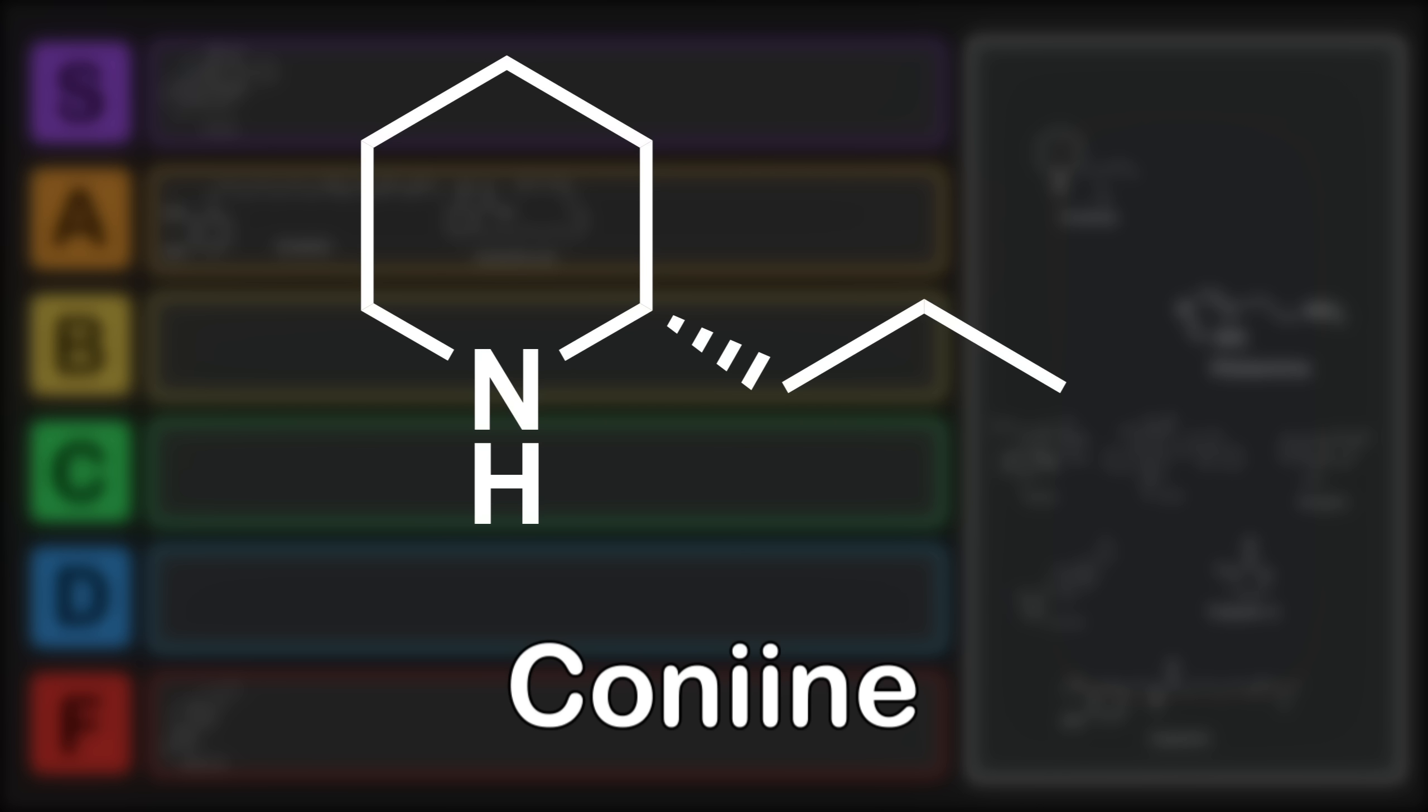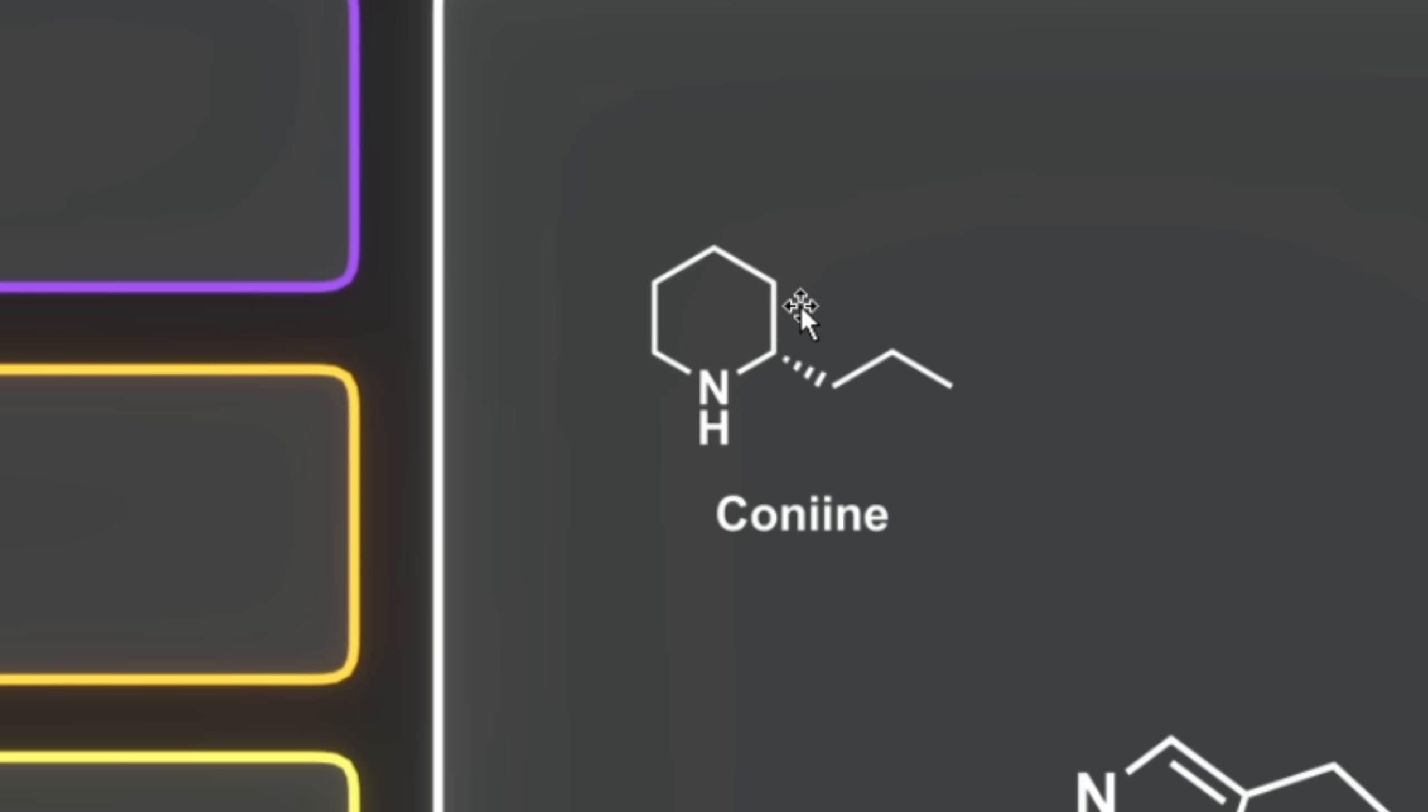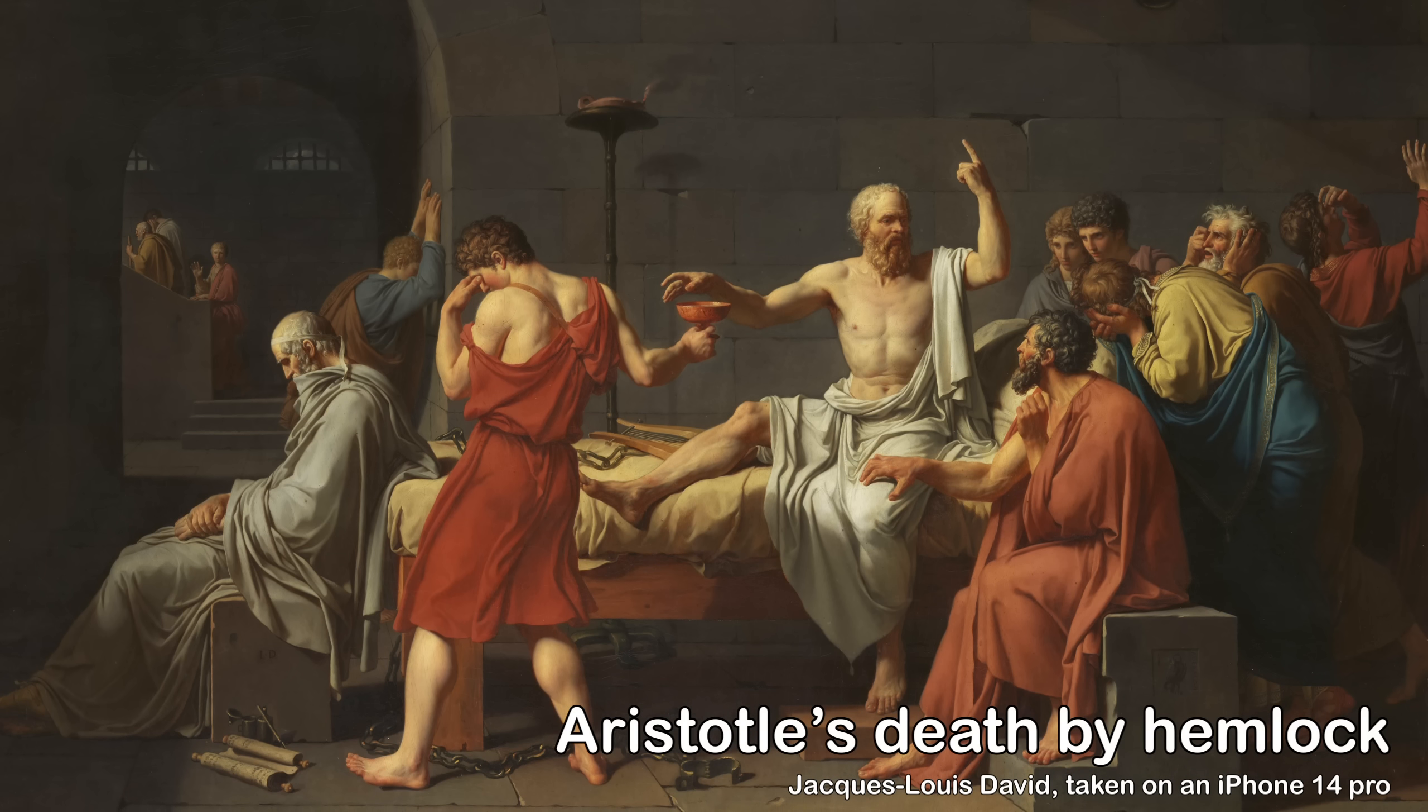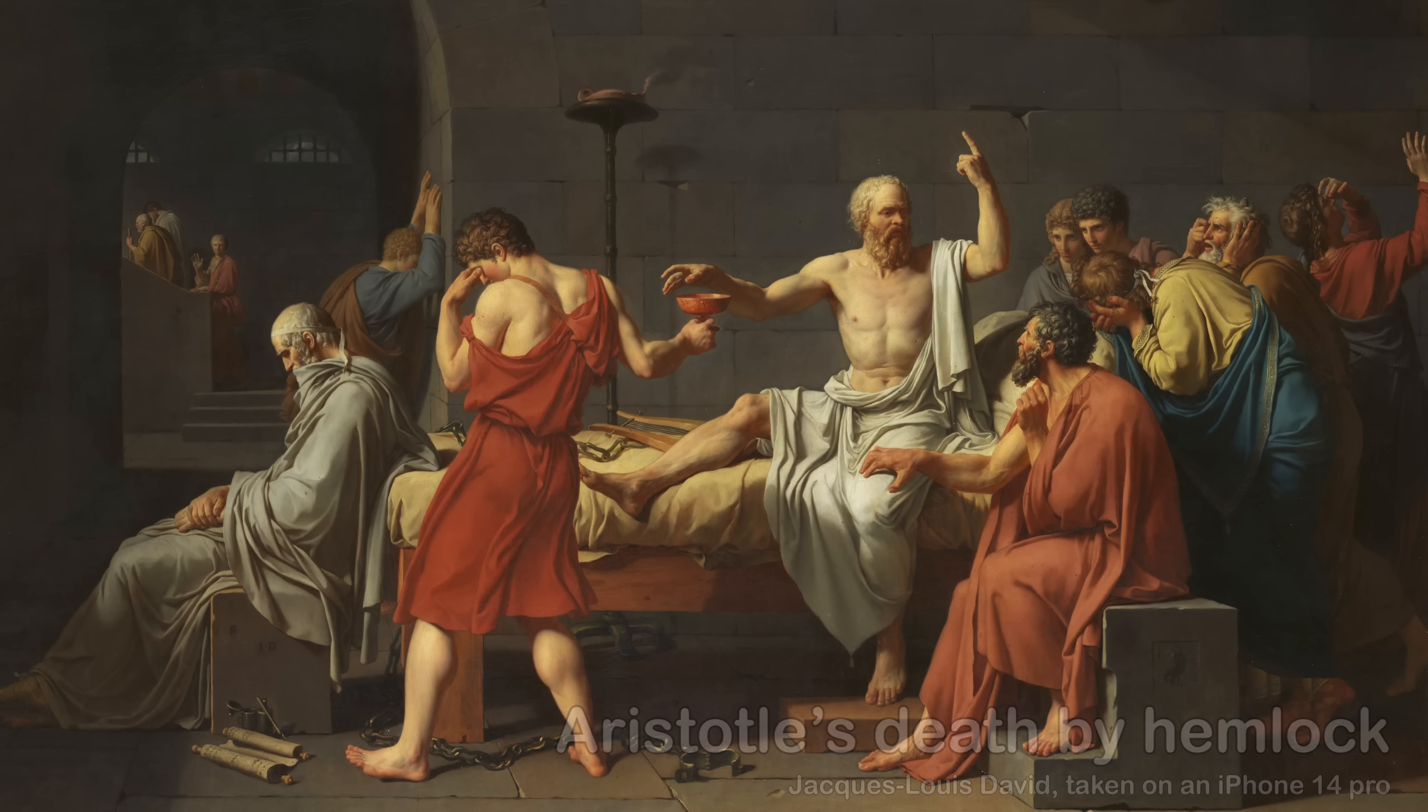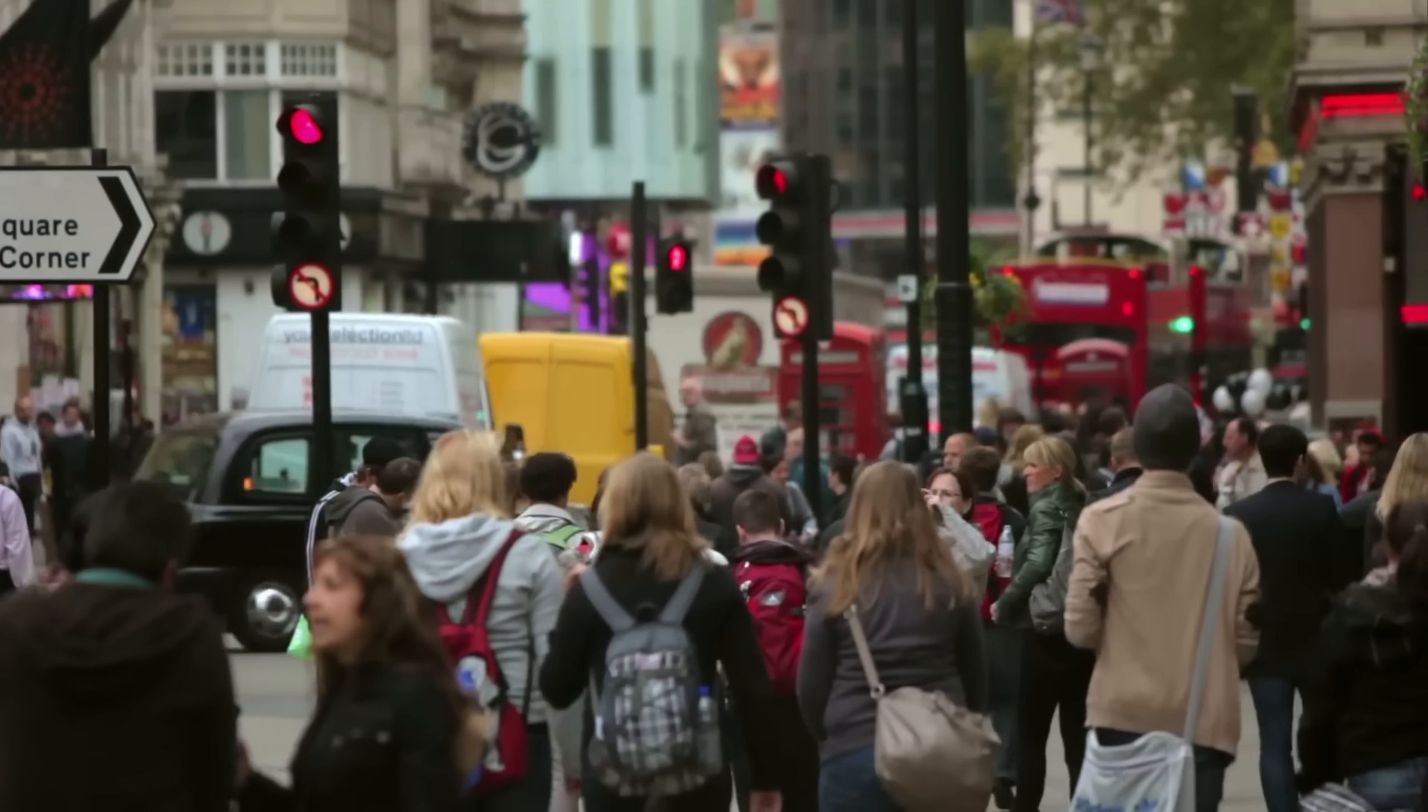This is conine. Conine is the main toxin found in hemlock. This has a piperidine ring as well as this propyl group, and to an organic chemist, this doesn't look like it would be toxic at all. This just looks like an obscure base somebody would use for a chemical reaction. Hemlock is one of the most prolific poisons throughout history and antiquity, being used in ancient Greece and the Roman Empire, throughout medieval Europe, and even in modern times.